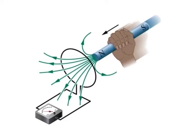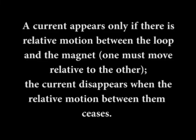However, if we move a bar magnet towards the loop, a current suddenly appears in the circuit. The current disappears when the magnet stops. If we then move the magnet away, a current again suddenly appears, but now in the opposite direction. If we experimented for a while, we would discover that a current appears only if there is relative motion between the loop and the magnet — one must move relative to the other — and the current disappears when the relative motion between them ceases.